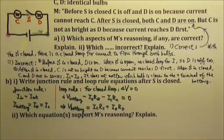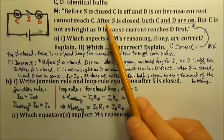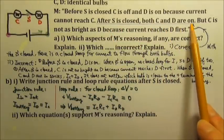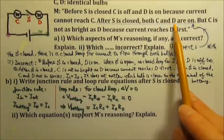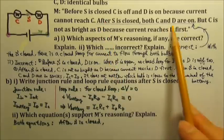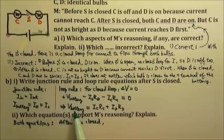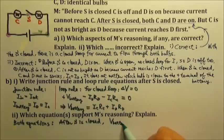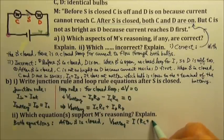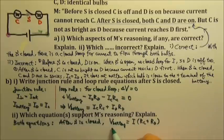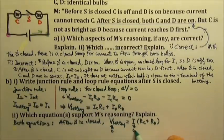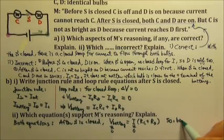For part B2, we need to identify which equations support Student M's correct reasoning. The correct reasoning from A1 is that after the switch is closed, both bulbs C and D are on — meaning both must get non-zero current. We need both equations for this. Since Ic and Id are equal, we can factor out the current: the battery voltage equals I times (Rc plus Rd). As long as the battery voltage is not zero, the current through the bulbs is not zero, so both bulbs will be on.